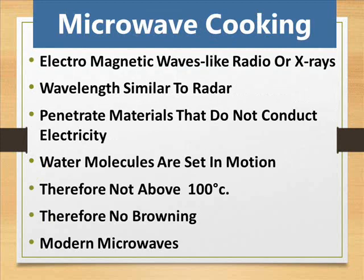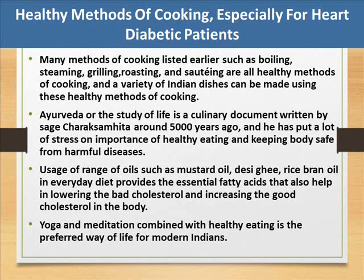Microwave cooking uses electromagnetic waves similar to radio or x-rays, with a wavelength similar to radar. They penetrate materials that do not conduct electricity, setting water molecules in motion — therefore temperatures do not exceed 100 degrees Celsius and no browning occurs. Modern microwaves address some of these limitations.